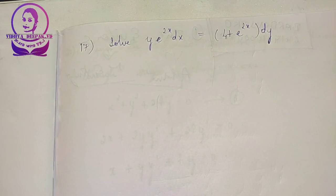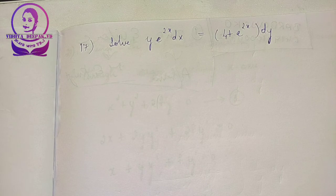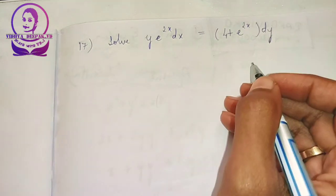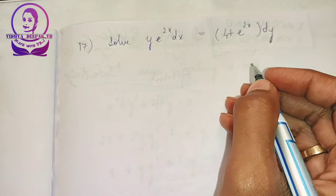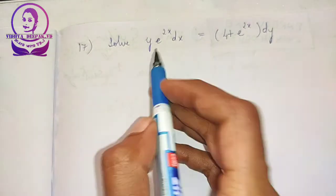We will continue this problem. I will solve y into e to the power of 2x dx is equal to 4 plus e to the power of 2x dy. This is variable separable form.